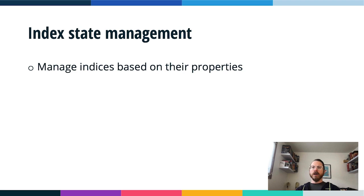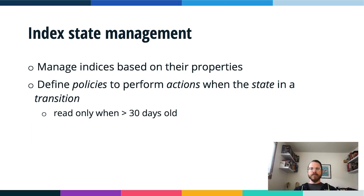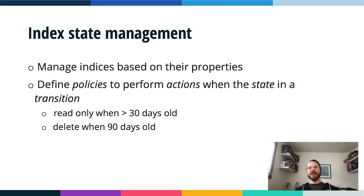There's an Index State Management plugin for OpenSearch that helps you manage indices based on their properties — for example, when an index reaches a certain size. It lets you create policies that form actions when a state transition occurs, giving indices a lifecycle. For instance, you can make indices read-only after 30 days or delete them past a certain age. This enables the principle that data is more useful when fresher — you probably don't need millisecond-precision data from six months ago to be actively writable.